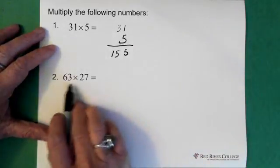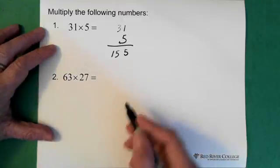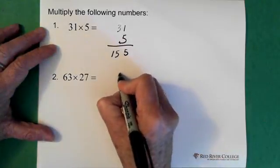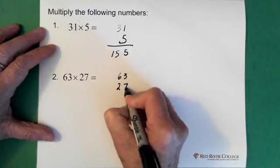Now let's talk about this question where each number is 2 digits. So we have 63 times 27.